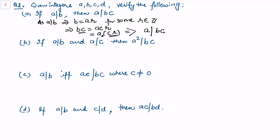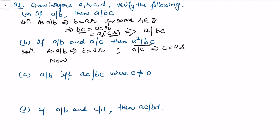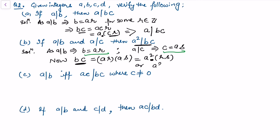For the second part: if a divides b and a divides c, then a² divides bc. Since a|b we write b = a·r, and since a|c we write c = a·s. Then bc = (a·r)(a·s) = a²·(rs). Since rs is an integer, a² divides bc.